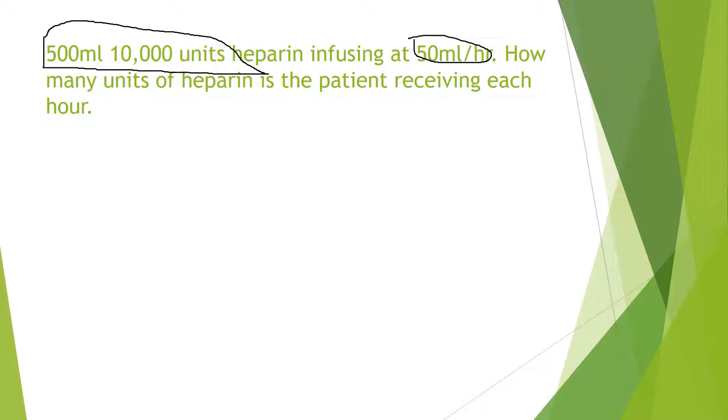I need to keep in mind now, since I'm looking for units per hour, guess what? In my bag, I want to make sure, and in my calculation, I want to make sure that units are on top. So the way I do that is I take that 10,000 units and then 500 milliliters.